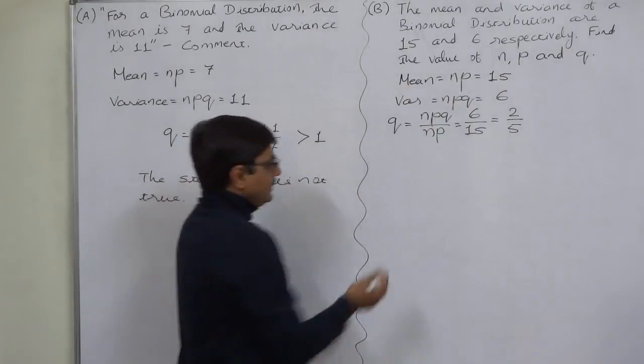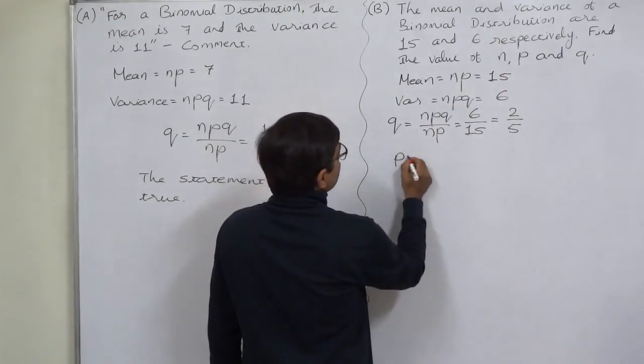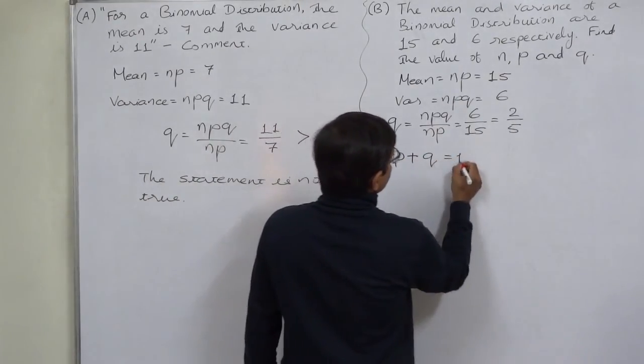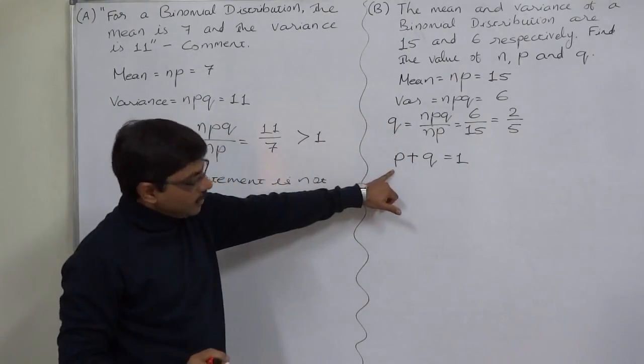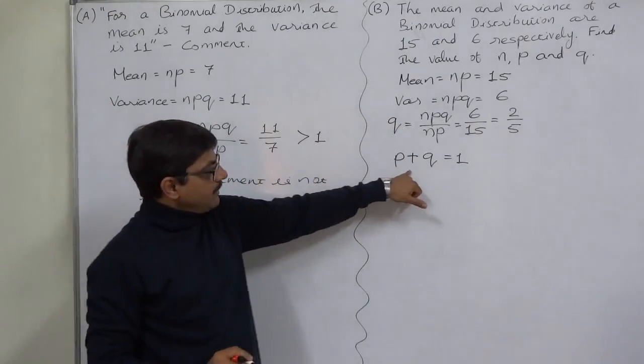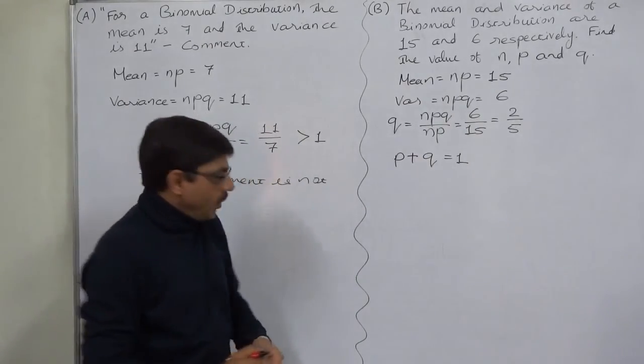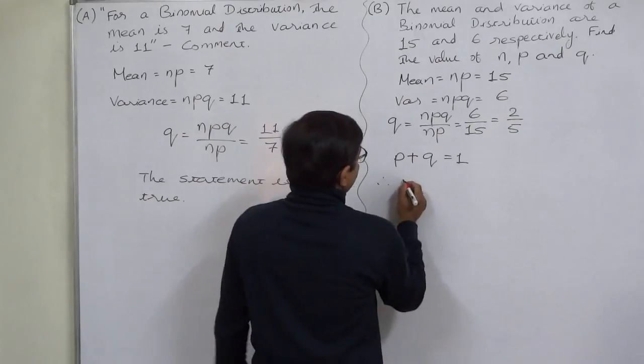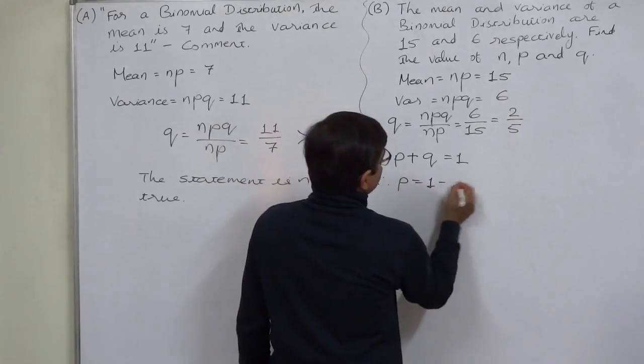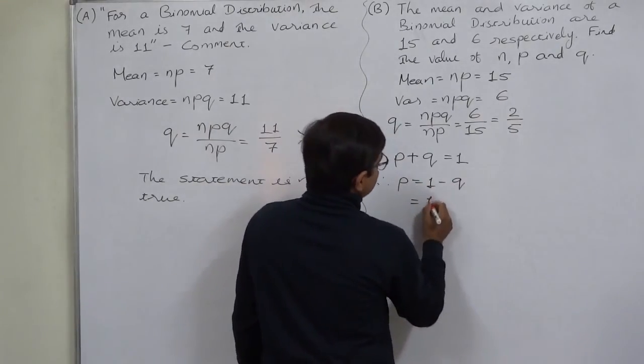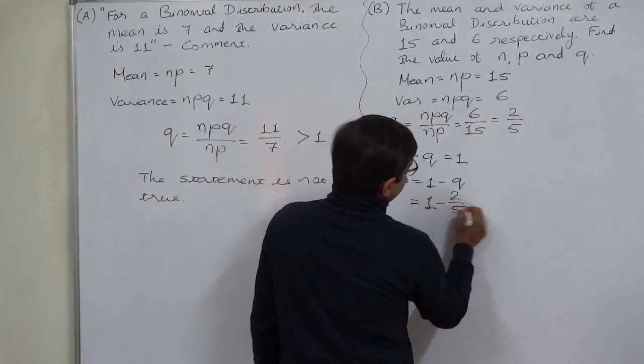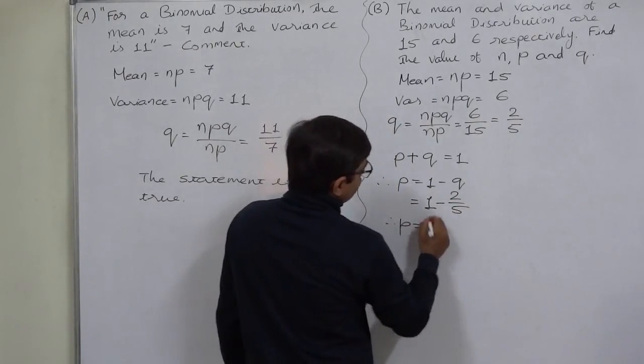Now we know that P plus Q equals 1. That means probability of happening of any event plus probability of non-happening of that event, the summation is 1. That means P equals 1 minus Q. In this case it is 1 minus 2 by 5, so P comes to 3 by 5.